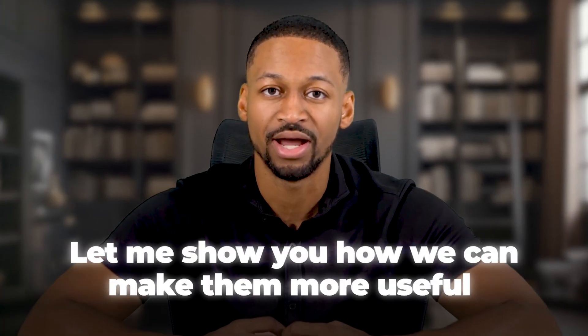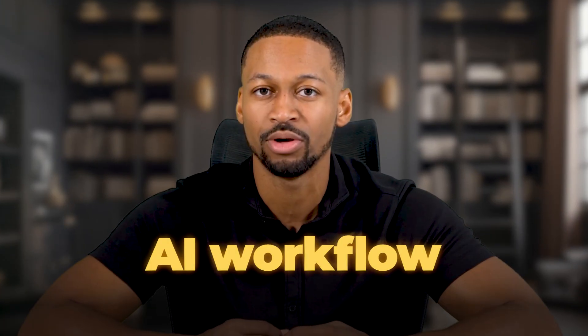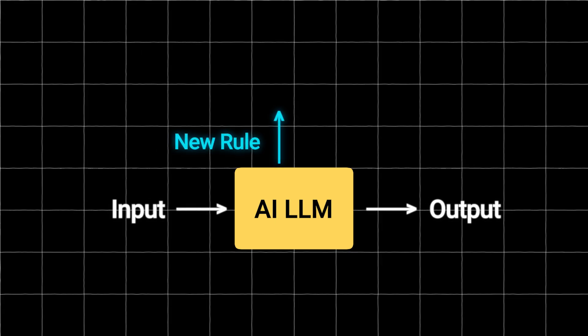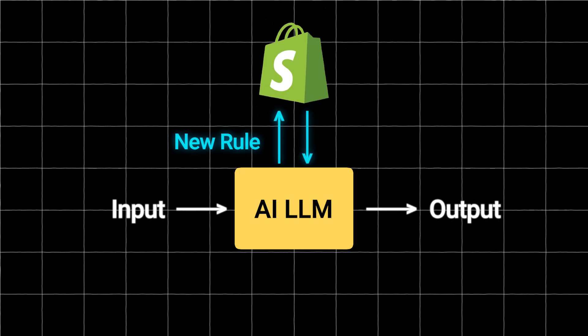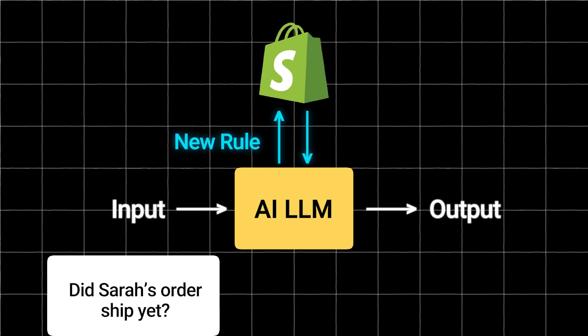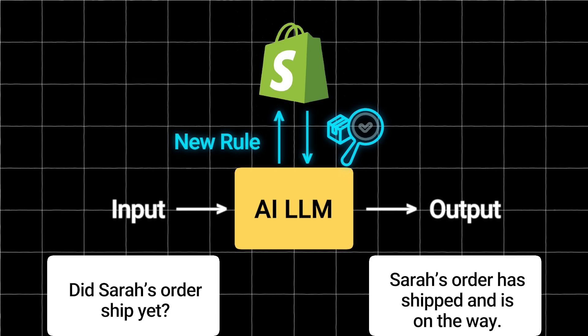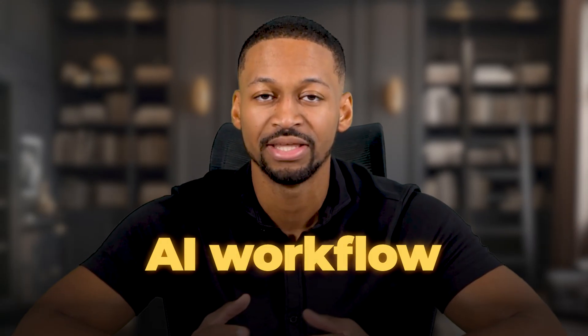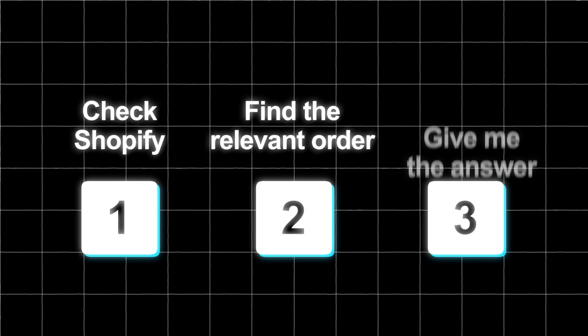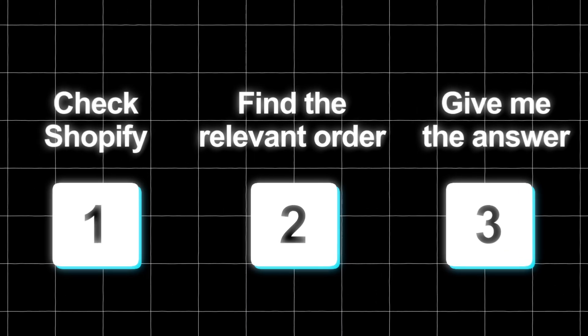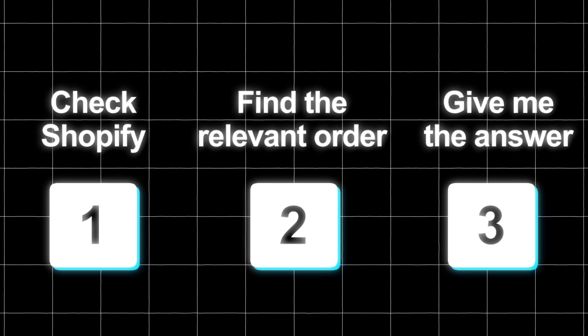Now that you understand how basic AI chat tools work and their limitations, let me show you how we can make them more useful by adding what are called AI workflows. Imagine you told the AI a new rule that said: every time I ask about a customer order, first check my Shopify store and then answer me based on what you find. With this rule in place, when you ask, did Sarah's order ship yet? The AI will first go to your Shopify store, look up Sarah's order, find the shipping status, and then tell you the answer. You give the AI a set of steps to follow in a specific order — step one, check Shopify; step two, find the relevant order number; step three, give me the answer based on what you found.